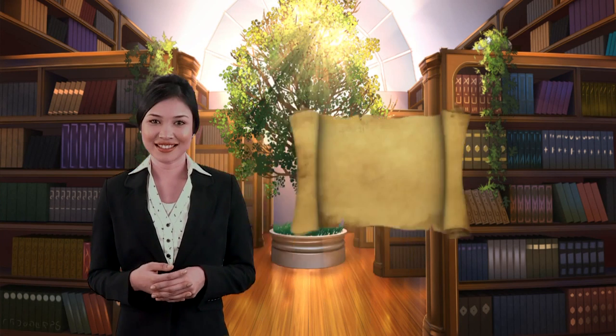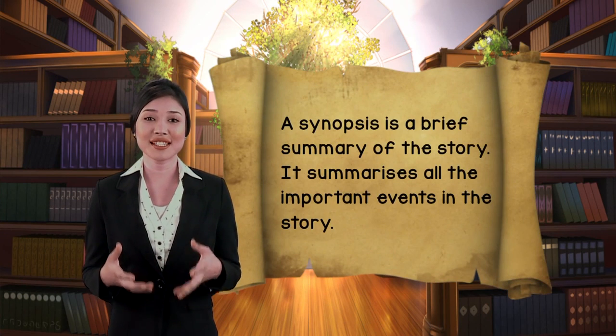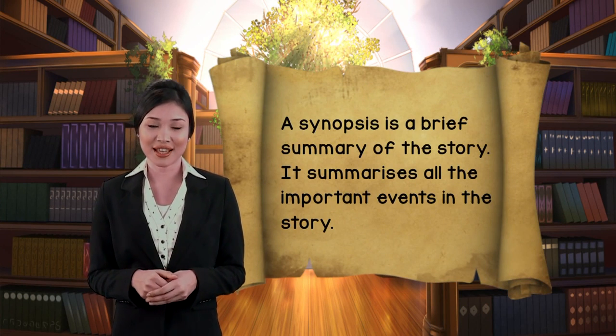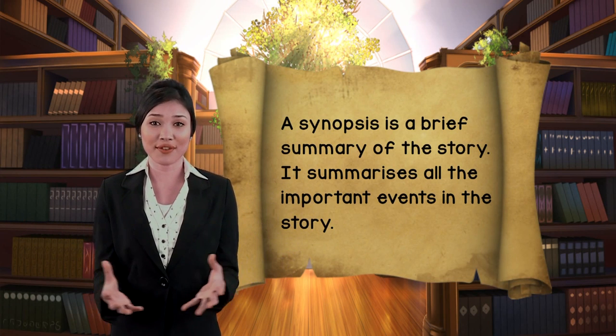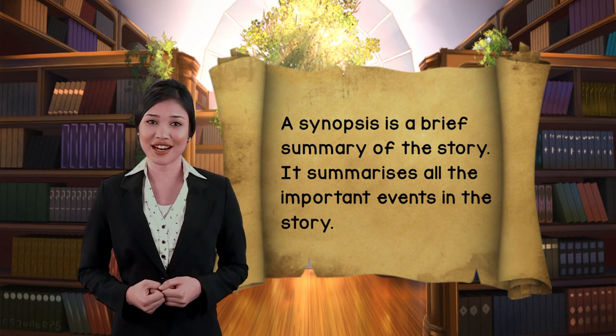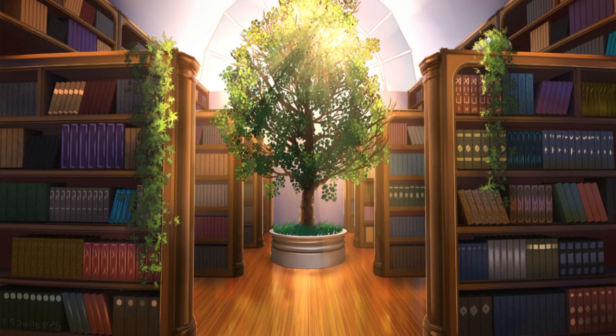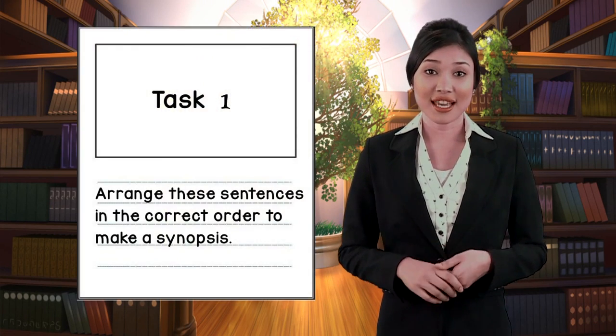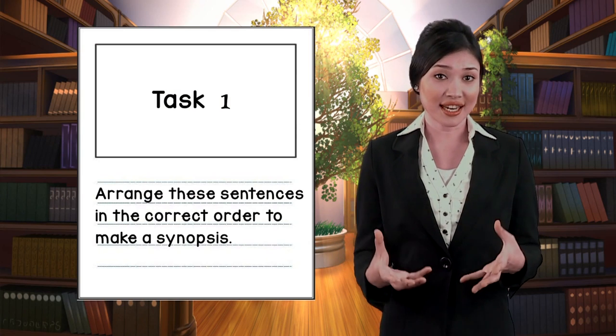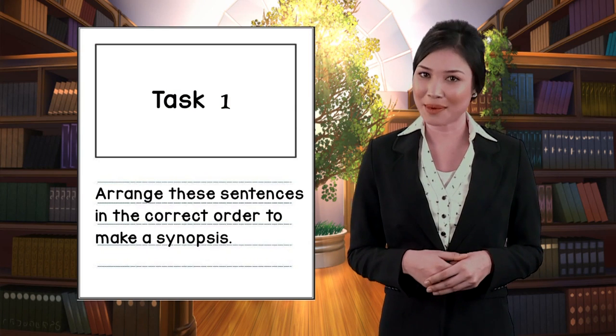Now we are going to talk about the synopsis of the story. A synopsis is a brief summary of the story — it summarizes all the important events. I'm going to show you a few sentences about the story. Your task is to arrange these sentences in the correct order to make a synopsis. Write your answer in the flowchart given.